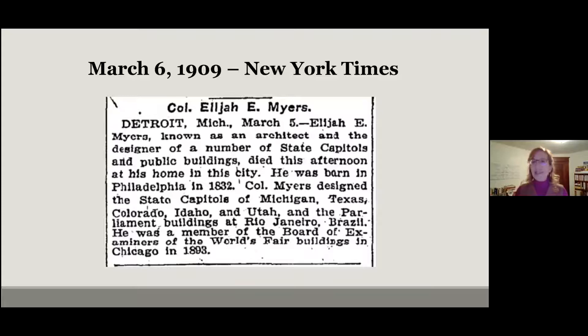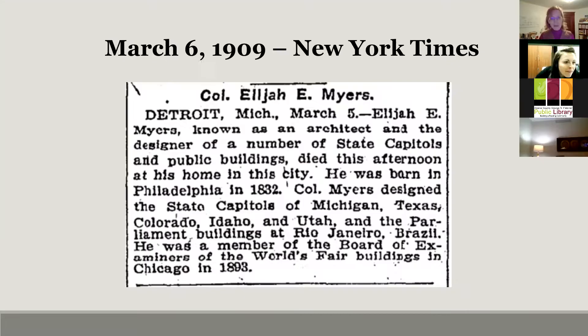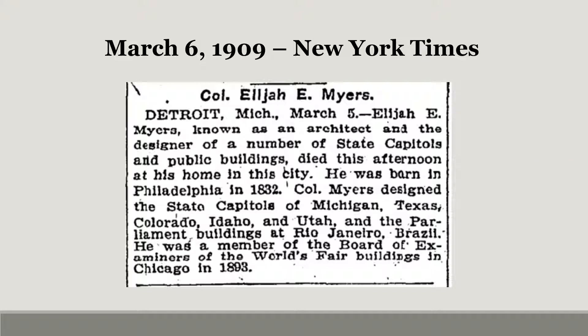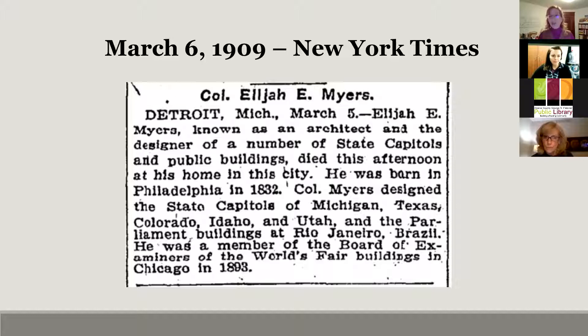Elijah Myers was a 19th century man — a Victorian. Some have argued that he was the embodiment, for better or for worse, of the Gilded Age: that brash, headstrong, fast-moving, exuberant period following the American Civil War. Myers' fame was such that when he died on March 5th of 1909, he merited an obituary in the New York Times. He was definitely a national figure, a name that people knew across the country, certainly in architecture circles.